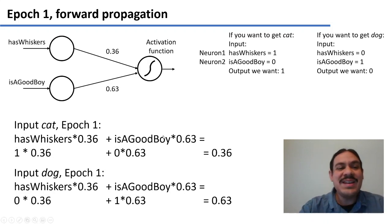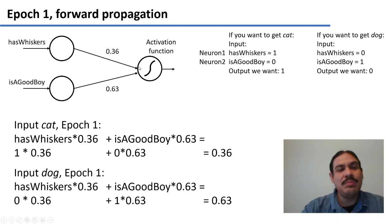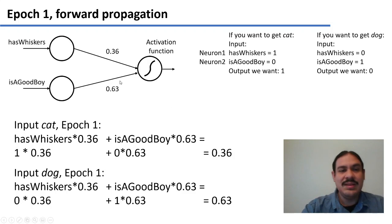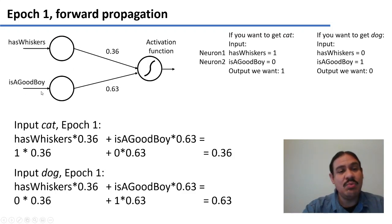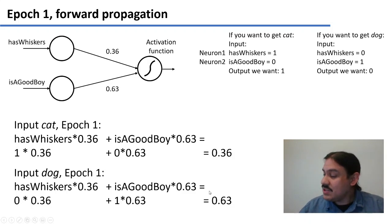These are the values. For cat, it will be 1 multiplied by 0.36, plus the feature is-a-good-boy which is 0 multiplied by 0.63, equals 0.36. For dog, the feature has-whiskers is 0 and is-a-good-boy is 1, so it's 0 multiplied by 0.36 plus 1 multiplied by 0.63, equals 0.63. This is what gets transferred from one layer to the next.